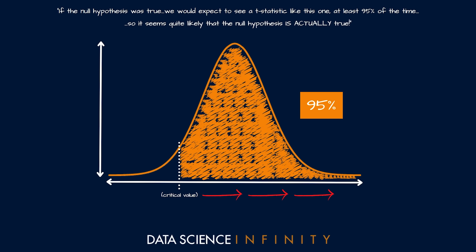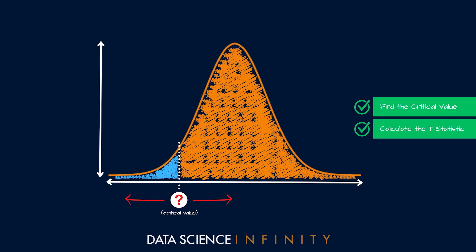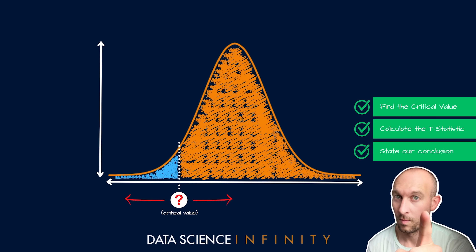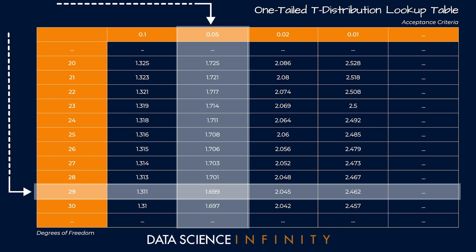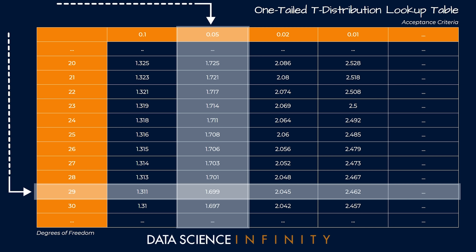So we essentially have three things to do: first, find the critical value based on our data and acceptance criteria; second, use our formula to calculate the t-statistic and see where it falls relative to the critical value; and third, state our conclusion — either reject the null hypothesis, concluding our team's mean vertical leap is lower than our rivals', or fail to reject it and conclude the difference is most likely down to random chance. Let's start with step one and find our critical value.